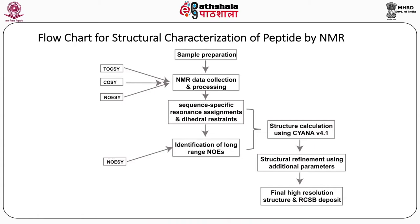Let us look at a flow chart for structural characterization of a peptide by NMR. First, the sample is prepared, then NMR data collection and processing is done — experiments collected are COSY, TOCSY, and NOESY. Then one does sequence-specific resonance assignments, dihedral restraints, and identification of long-range NOEs from the NOESY experiment. The dihedral and distance-restraint information is input into a structural calculation program, usually CYANA, and structural refinement is carried out. Final high-resolution structures are deposited in the Protein Data Bank.